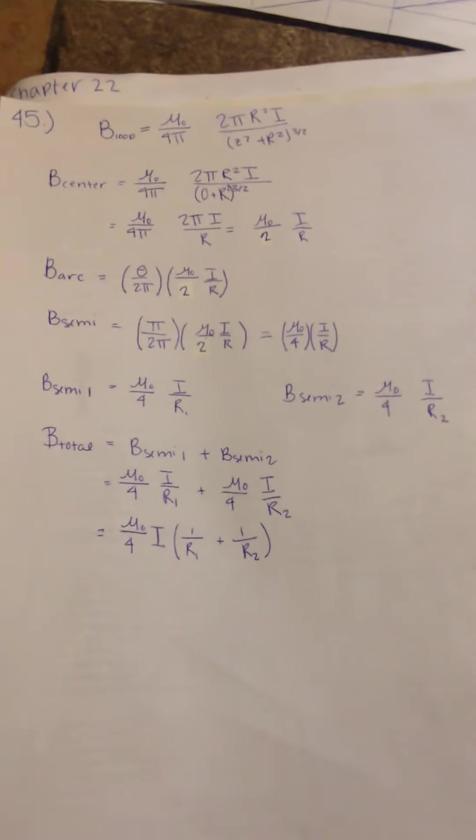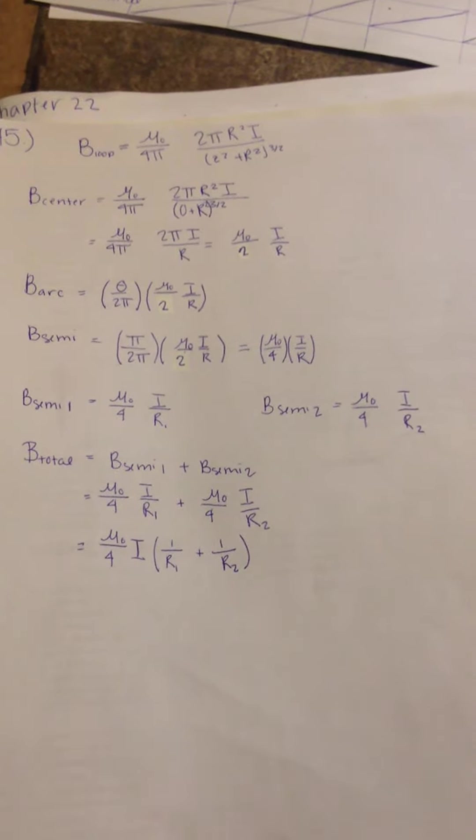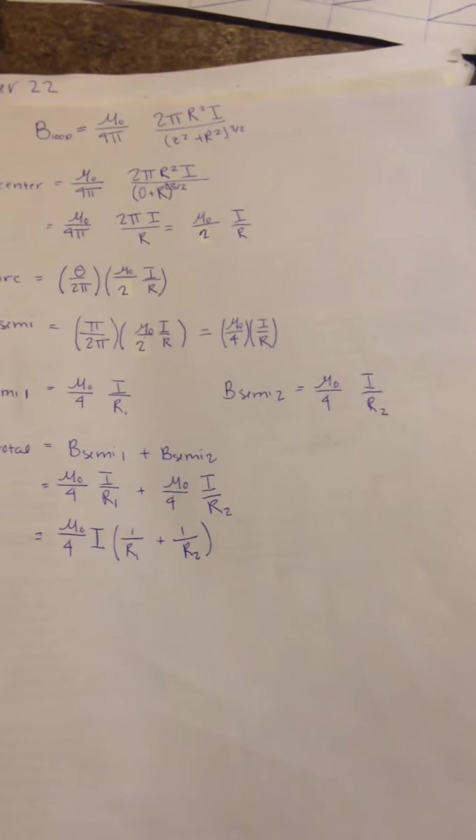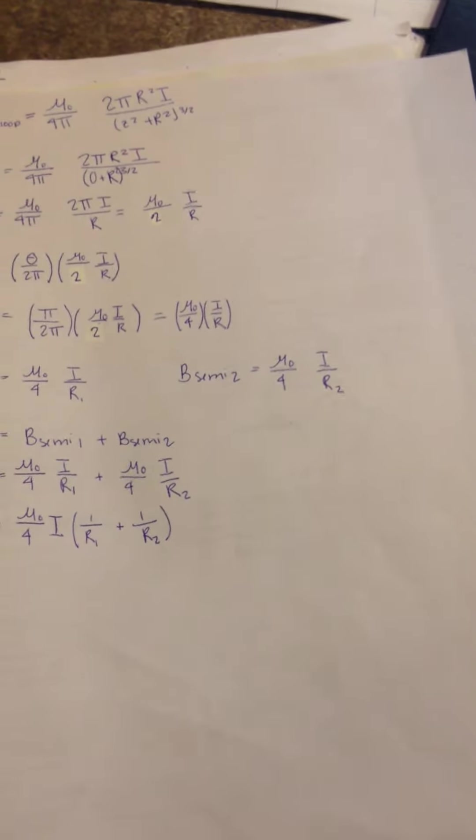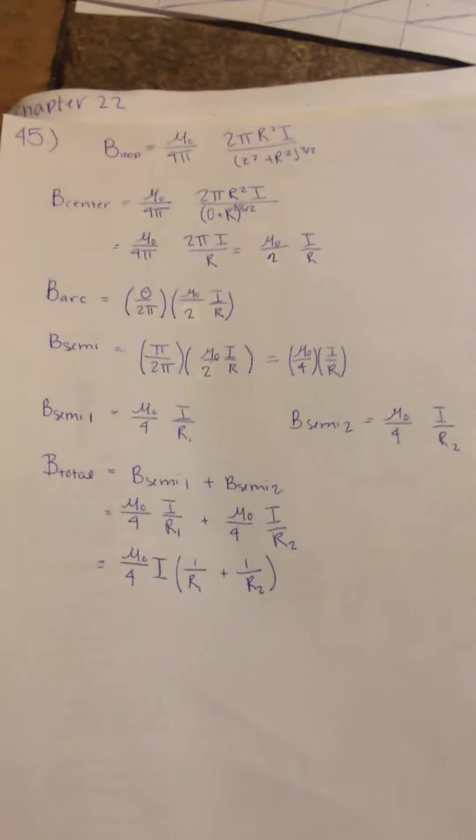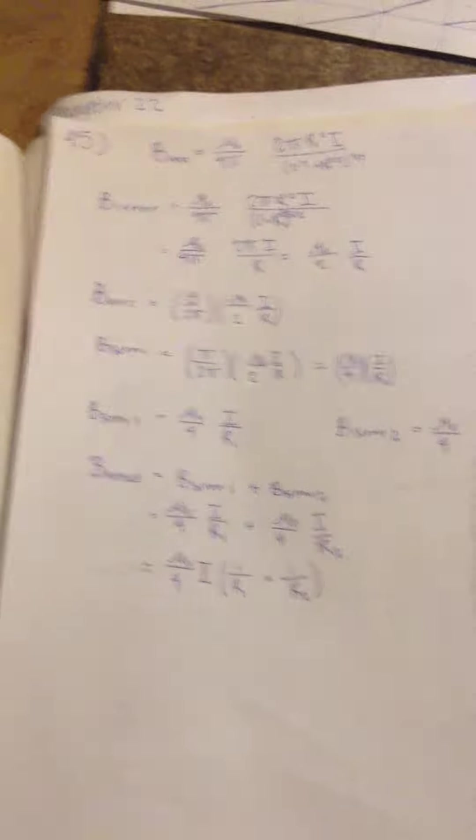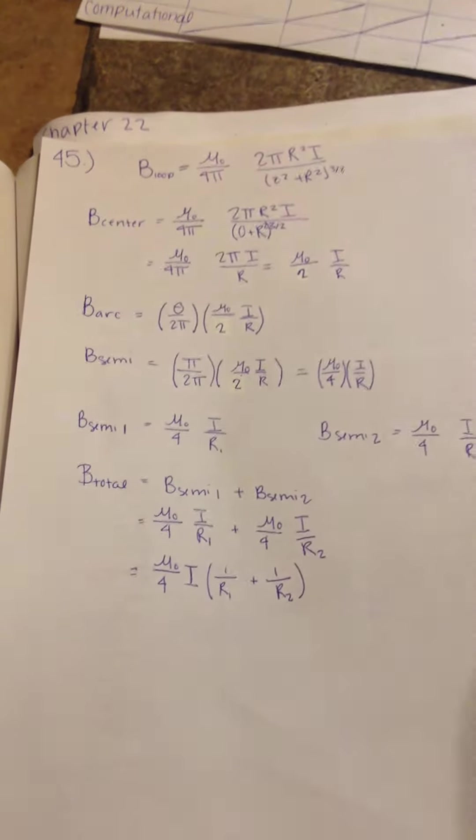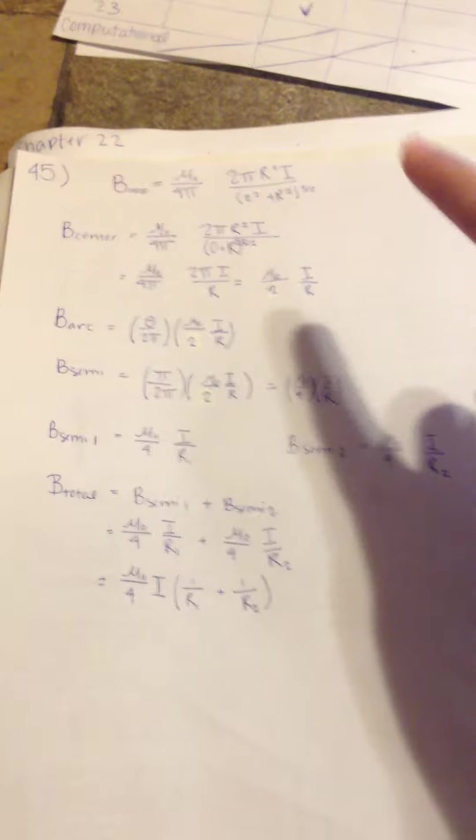So we first know that the magnetic field of a loop is that top equation. It's mu naught over 4 pi, 2 times R squared times I over Z squared plus R squared to the 3 halves. So that's pretty much what we're doing here. That's pretty straightforward. You can find that in your textbook. It teaches you how to derive that.